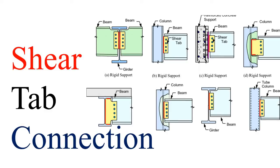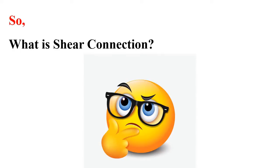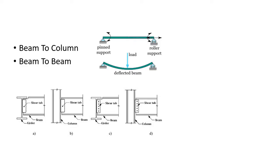In this video I will discuss different types of shear tab (CRTAP) connections and their merits and demerits. If you are a beginner, you should know what a shear tab connection is. Consider a simply supported beam — under the action of any transverse load, the supports are considered as pinned supports.